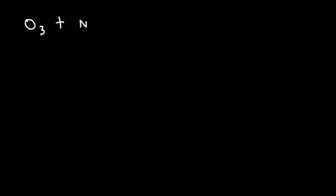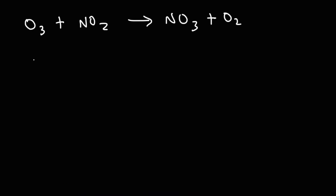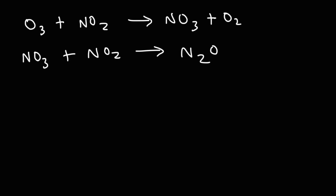Consider this reaction where O3 reacts with NO2 to become NO3 plus O2 — that's the first step. For the second step, NO3 plus NO2 turns into N2O5. The first step is slow and the second step is fast. Write the overall reaction, determine the rate law for the overall reaction, and identify any intermediate or catalyst.